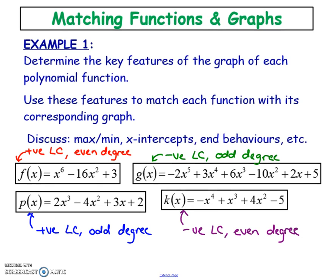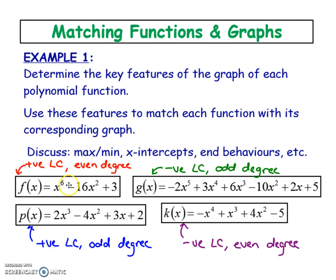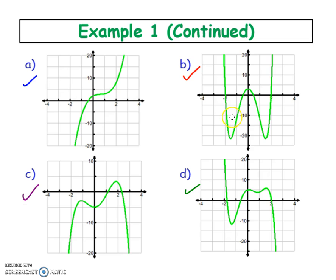Just determining certain key features of the equations, can we match them with these graphs? Something like this x to the power of 6 graph with a positive leading coefficient - we should expect it's probably this one. Both end behaviors, because it was an even degree function, should go in the same direction. Since it's a positive leading coefficient, they should go up and up, versus this one that's going down and down.